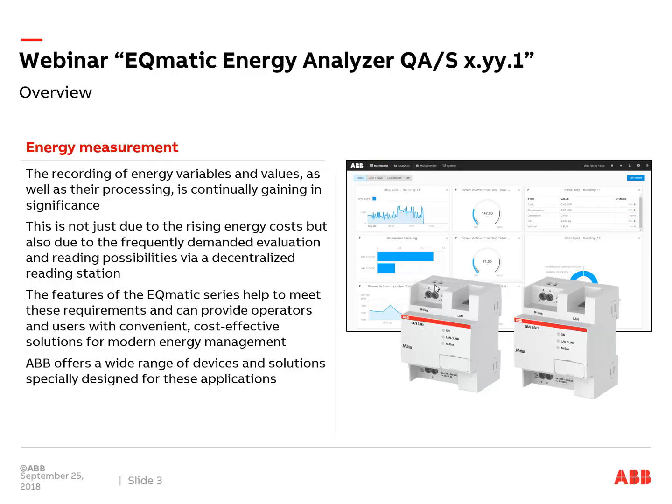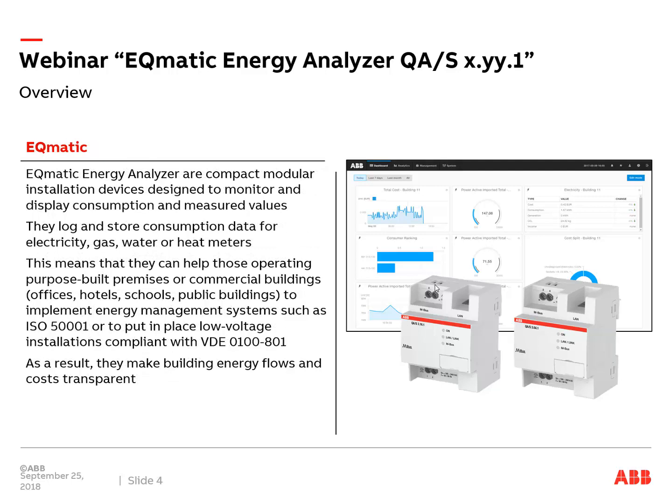In October 2017 we gave a webinar about the Energy Analyzer QAS MBUS. You can find that recording and slides on our training and qualification database at abb.com/knix under training and qualification. This webinar continues from that October 2017 session. The QAS Energy Analyzers are modular DIN-rail components to install in a distribution board. They help implement energy management systems such as ISO 50001 in different building types, from typical residential buildings up to hotels or airports. Consumption is stored in the devices and can be shared with superior systems like SCADA.